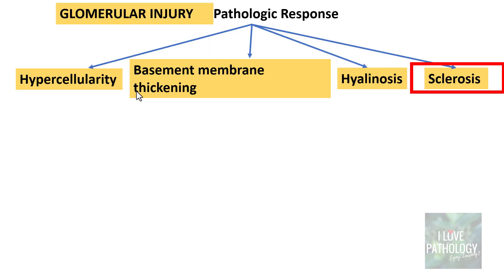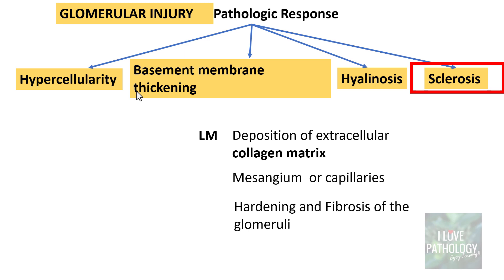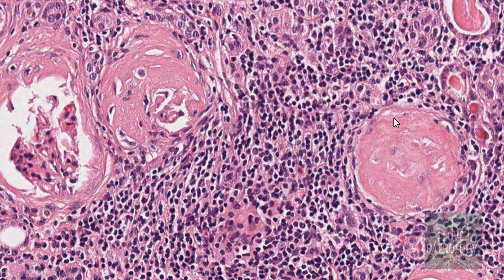The fourth pathologic response is sclerosis. In contrast to hyalineosis, sclerosis is the deposition of extracellular collagen matrix in the mesangium or in the capillaries, resulting in hardening and fibrosis of the glomeruli. It also obliterates the capillary lumen just like hyalineosis. In contrast to hyalineosis which is seen in early stages of renal damage, sclerosis is often seen in advanced stages. A sclerotic glomerulus is completely replaced by collagenous material, ranging from periglomerular fibrosis to completely sclerosed glomeruli.